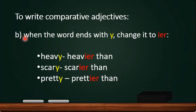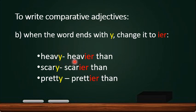However, when the word ends with -y, we cannot add -er at the end of the word. Instead, we have to remove the -y and change it to -ier. For example: heavy — we remove the -y, so it becomes heavier than. Scary becomes scarier than. Pretty becomes prettier than.